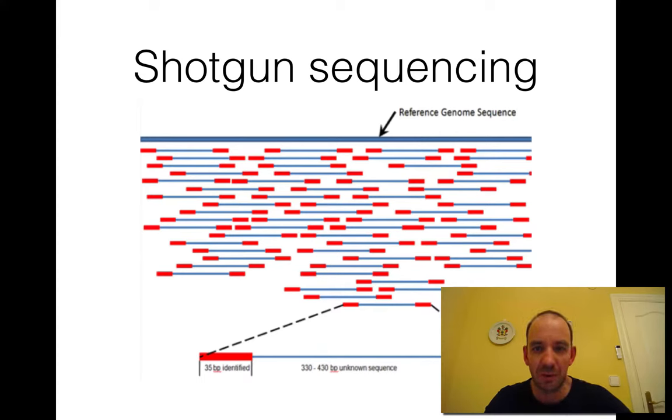You basically just randomize your DNA and sequence parts of it together. Particularly, if you randomize parts of DNA that are of a quite standardized length and you sequence the beginning and end of it, you can use this very efficiently for assembly of the genomes.